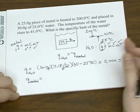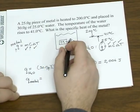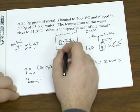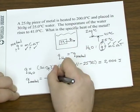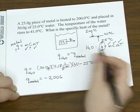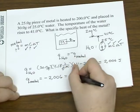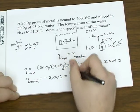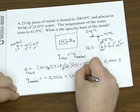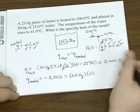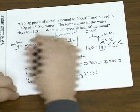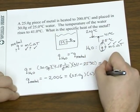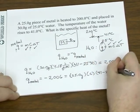It got that heat from the metal. Since the metal is losing that heat, we show that with a negative sign. Its mass is 25 grams. We're looking for C. The change in heat, the final temperature was 41 minus the initial temperature which is 200.